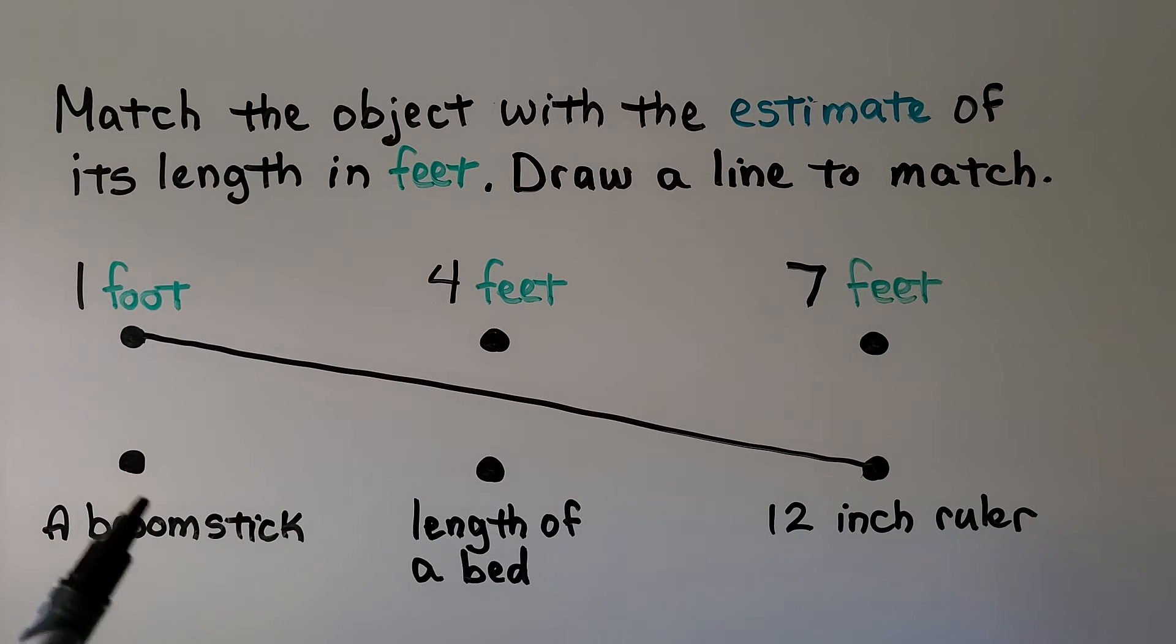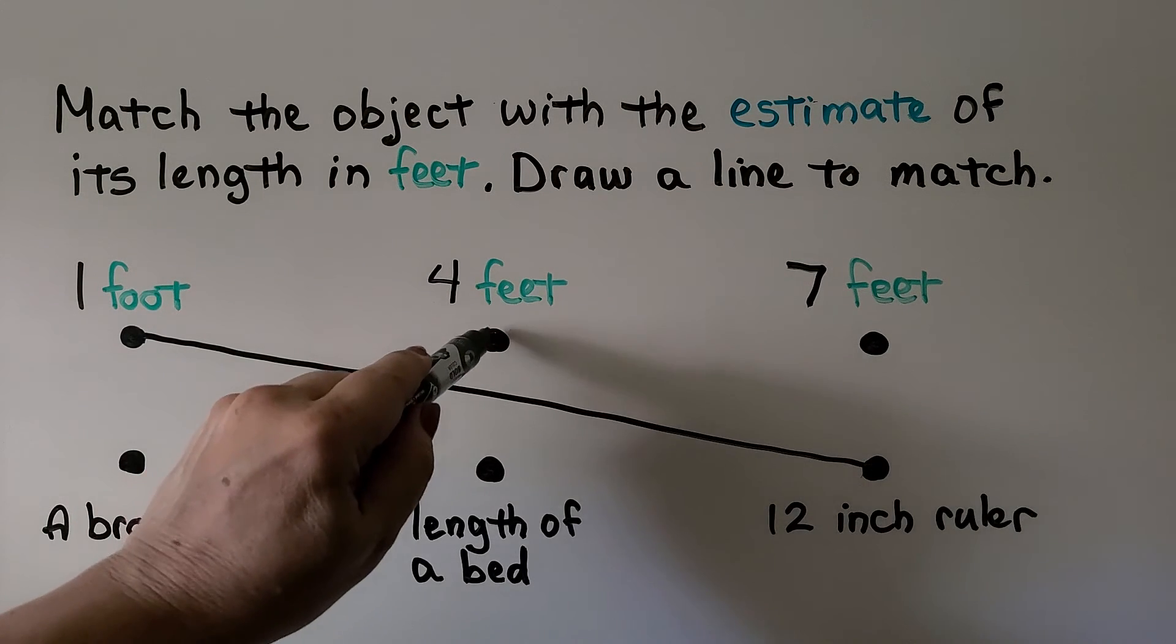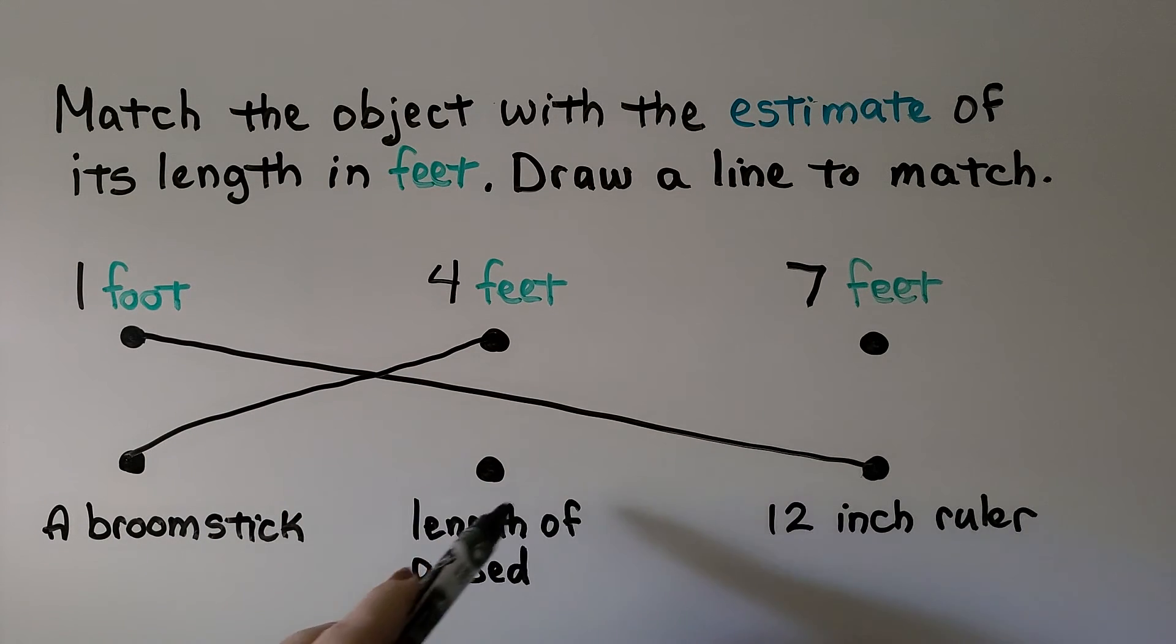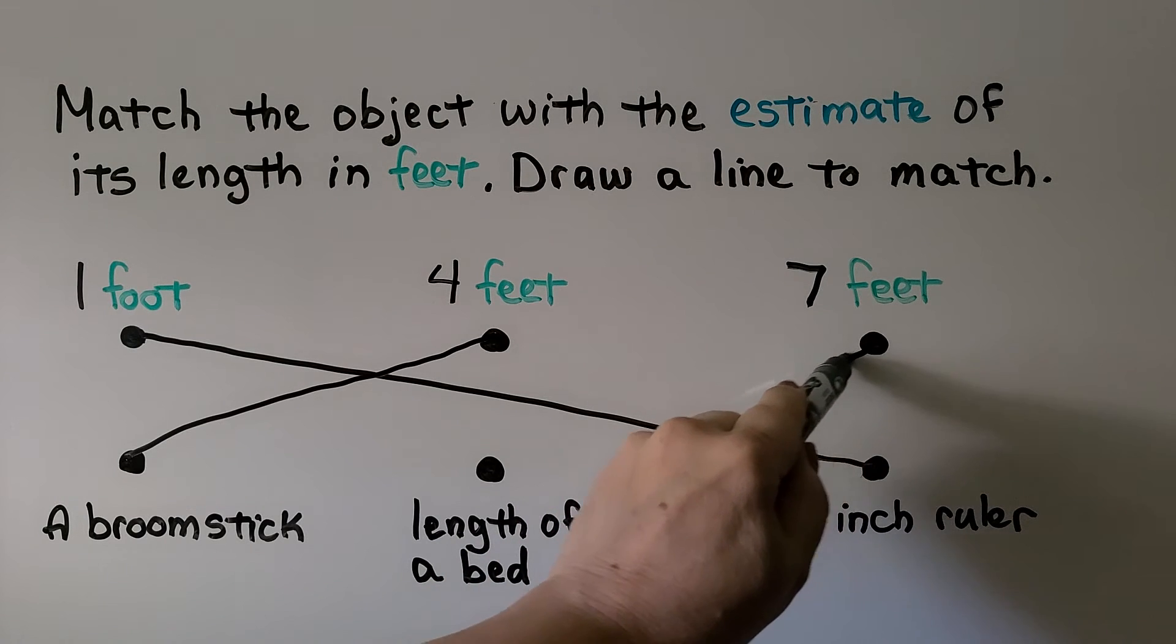Which do you think is 4 feet, a broomstick or the length of a bed? Well, if you said a broomstick, you're right. They're about 4 feet long. That means 7 feet must be the length of a bed.